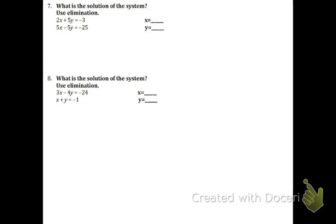Elimination. Ideally, the numbers in front — called the coefficients — are the same. In this problem, the 5s are the same and they have opposite signs in front, so that means we're going to add in order to get rid of them. So we get 7x. The 5ys cancel. We get negative 28 on the other side. Remember, when you add two negatives, you get more negative. Divide both sides by 7 and you get x equals negative 4.